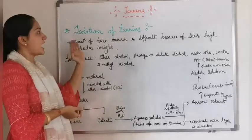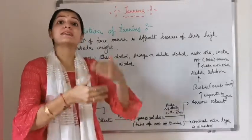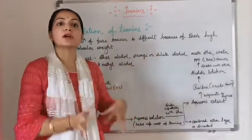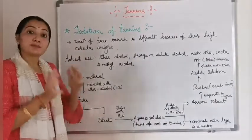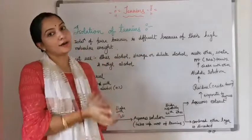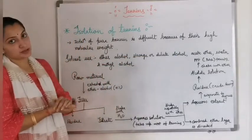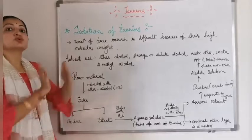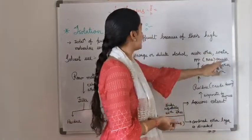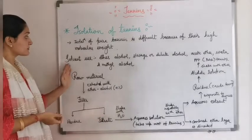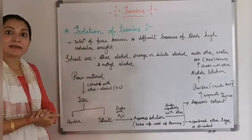Now moving to the next topic: isolation of tannins. In this we study how we can isolate tannins from crude or plant material. Isolation of pure tannin is quite a difficult method because tannins have a high molecular weight. The solvents used for isolation of tannins are ether-alcohol, strong or dilute alcohol, acidic ether, water, and methyl alcohol.